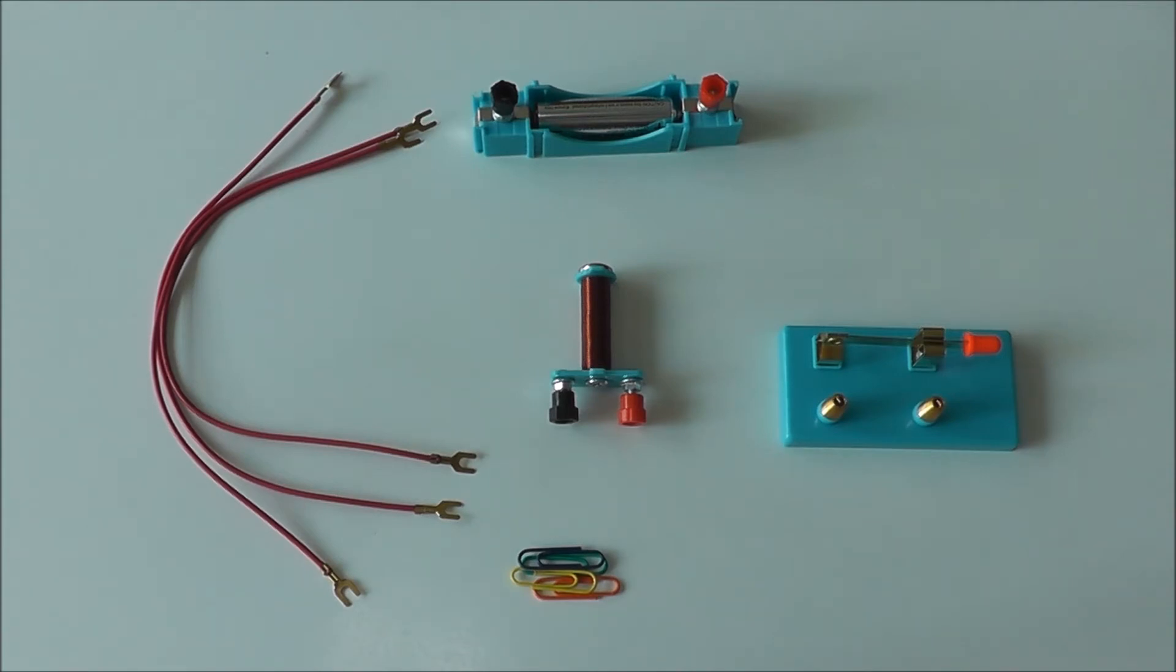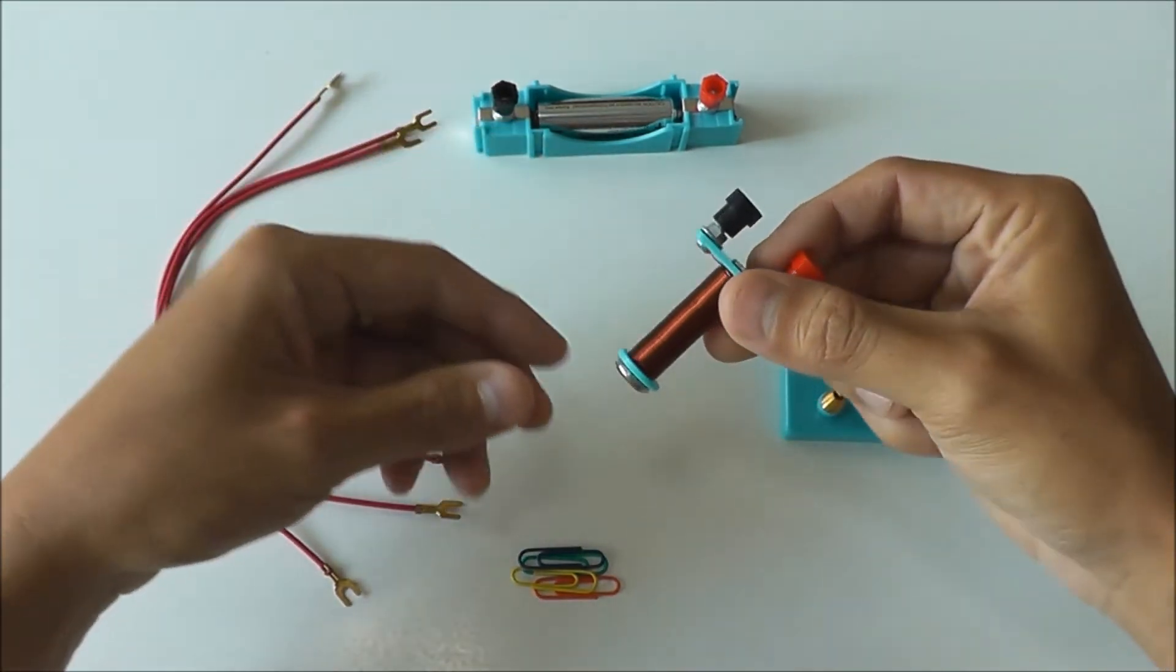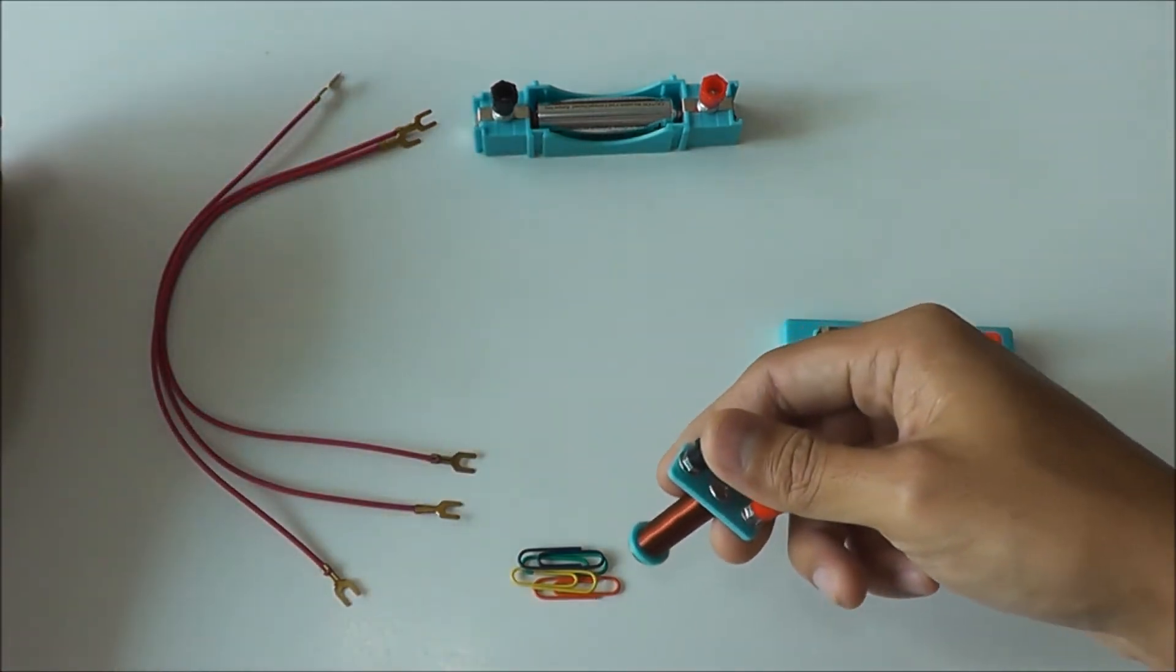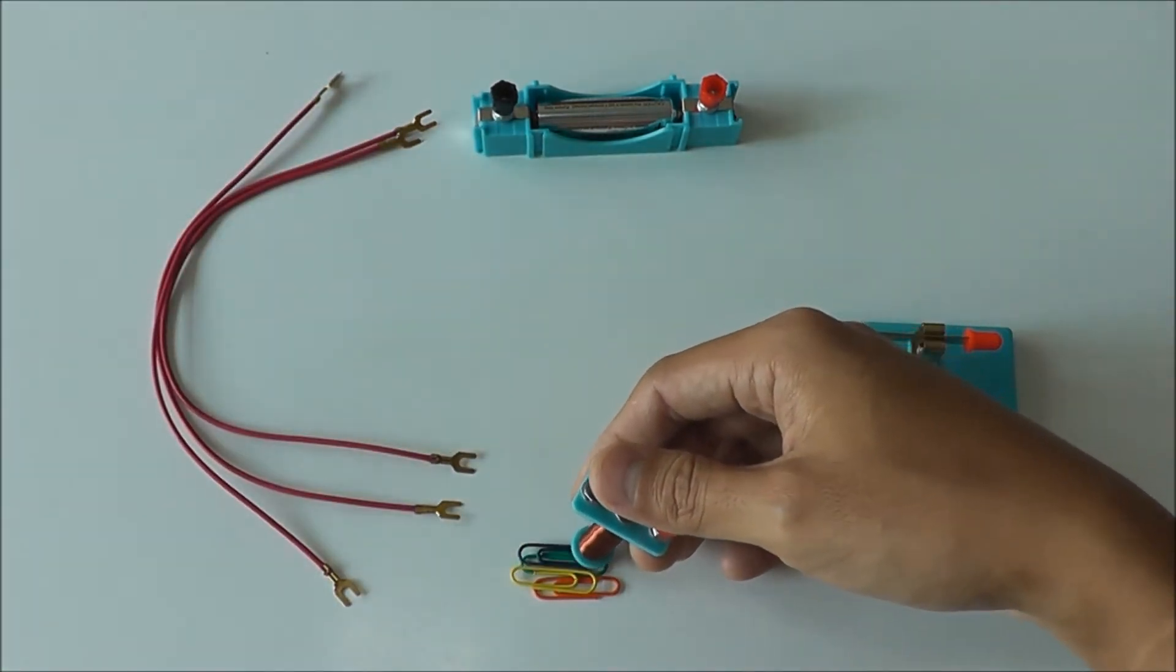First of all, I want you to take a look at this electromagnet. It is not magnetized at first, so if you were to place it over the paper clips, it does not attract.